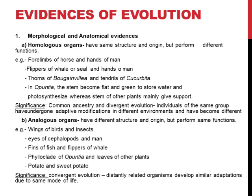The next two examples are from plants. Thorns of bougainvillea and tendrils of cucurbita: both arise from the same axillary bud. They arise from the axils of the leaf and have the same origin and structure, but again function differently. The thorns of bougainvillea are used for protection, and tendrils of cucurbita are used for support or for climbing.